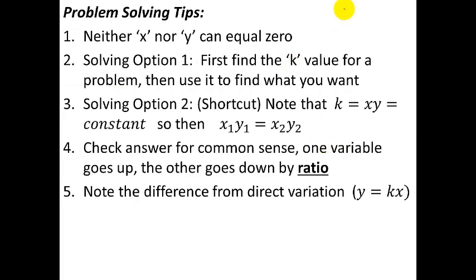OK, so some problem solving tips. And then we'll jump straight into the examples. The first is that neither x nor y can equal 0. Because we have this equation, let me write it again, y equals k over x. You can't divide by 0, so x is not going to be 0. If k is a number and x is a number, when you divide two numbers, you'll never get out a 0 either. So neither x nor y can be 0.